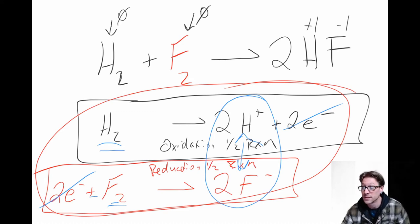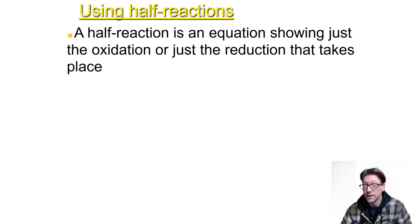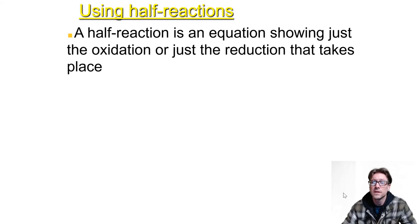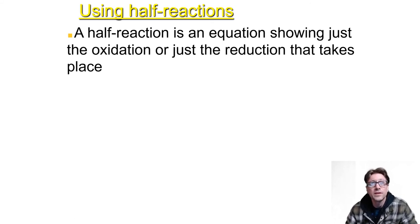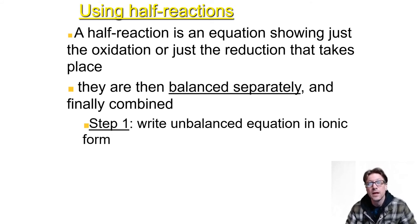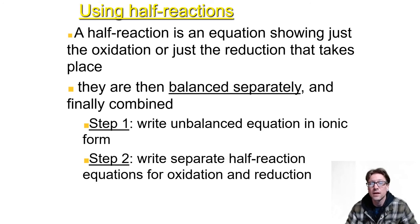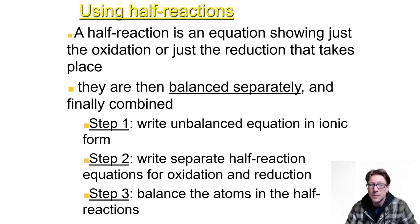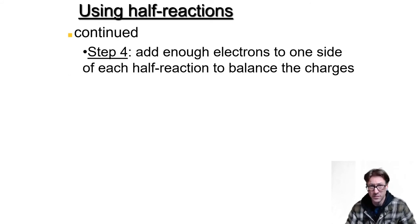Be ready for some sample problems and free response questions on oxidation-reduction — it's coming soon! To recap the half-reaction method: step one, write the unbalanced equation in ionic form. Step two, write separate half-reaction equations for oxidation and reduction. Step three, balance the atoms in the half-reactions. Step four, add enough electrons to one side of each half-reaction to balance the charges.